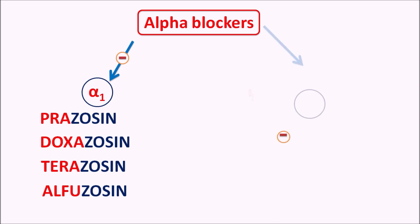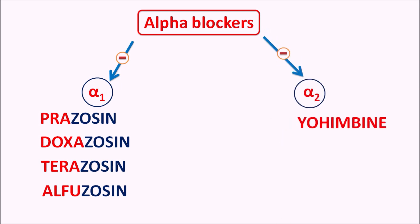Similarly, a few drugs can block the alpha 2 receptors. We have drugs like yohimbine and idazoxan. These drugs are therapeutically not useful because they produce complex physiological effects, and particularly they can increase psychotic symptoms.